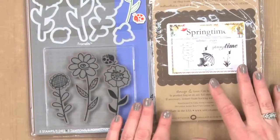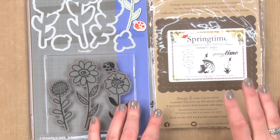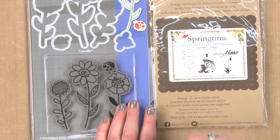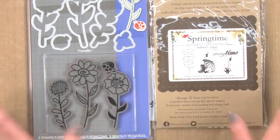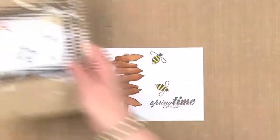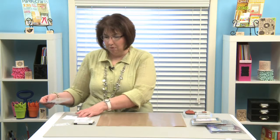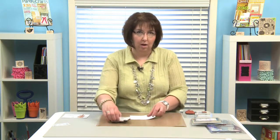Here are the two stamp sets that we're going to use. Both are cling stamps and this one actually has dies that come with it, but we're going to use two different companies, two different stamp sets to create this scene. Very easy to do and gives you a lot more flexibility on what you can accomplish with your stamps.